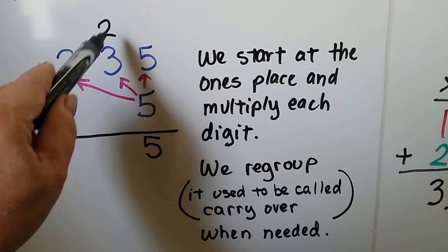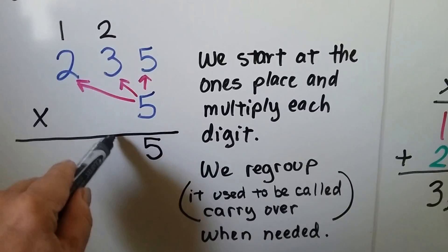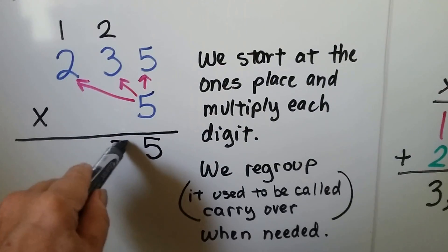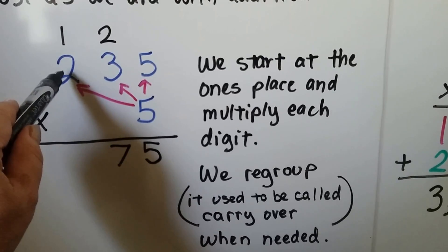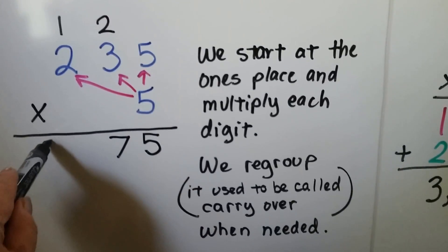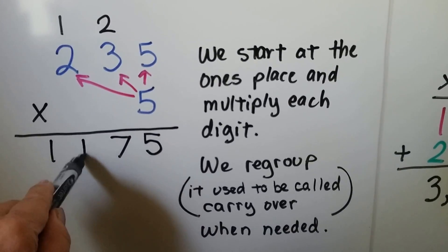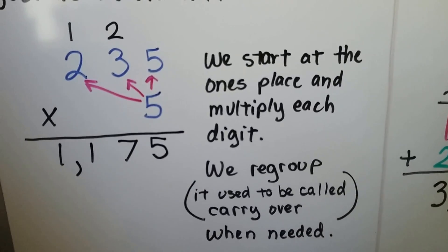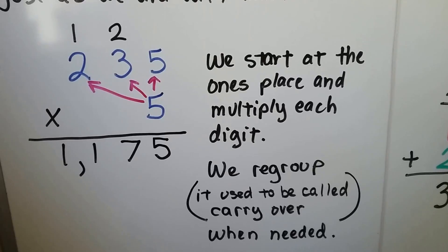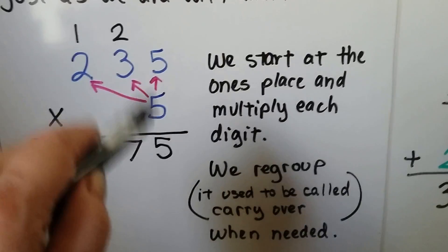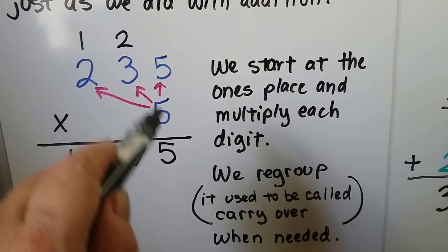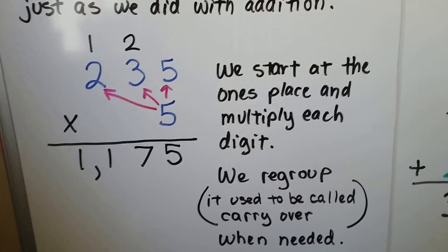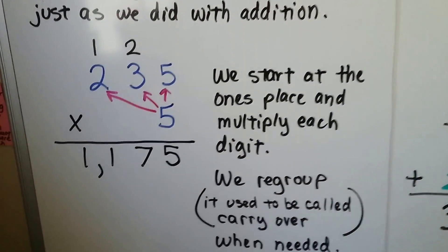Now we go here: five times three is fifteen, and we remember to add the two, so we have fifteen, sixteen, seventeen — carry that one and put the seven down. Then we do five times two which is ten, plus one more is eleven, so we have 1175. Just remember it's like a fan — you're starting in the ones place and slowly fanning out to the larger place values.